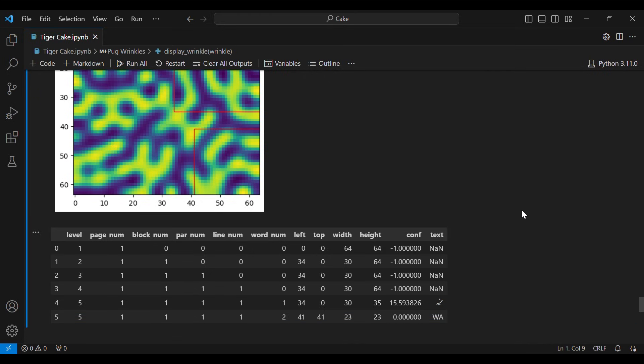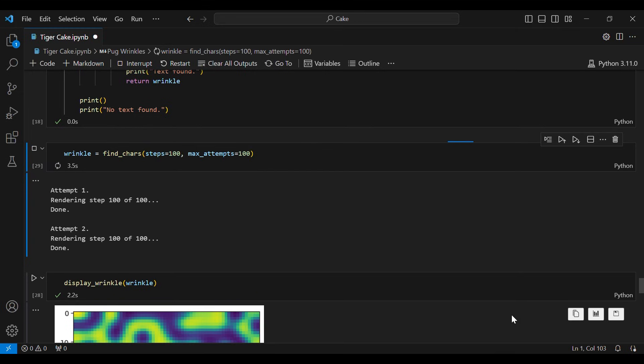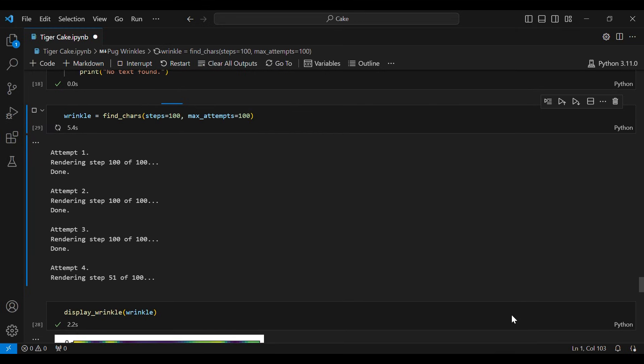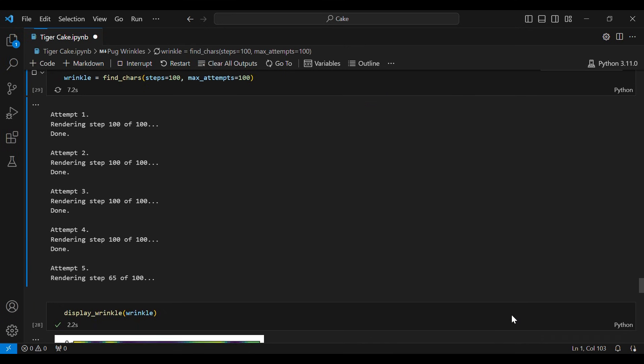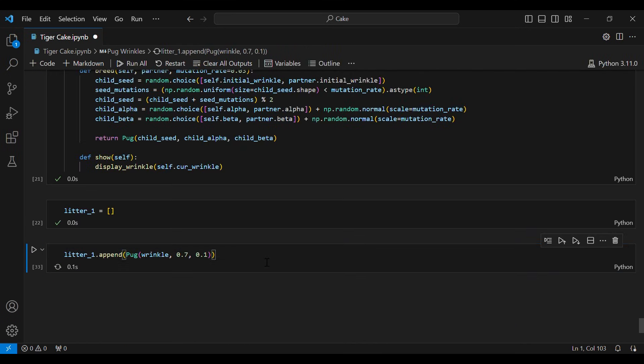For the first generation of pugs, I wrote a script to generate wrinkles from random initial seeds until it finds one with text. I did this until I had a dozen dogs. Out of those dogs, I picked the best two to breed.